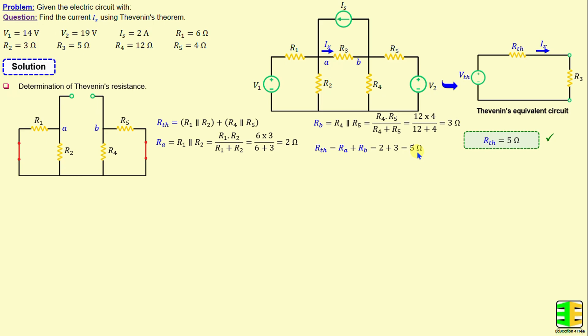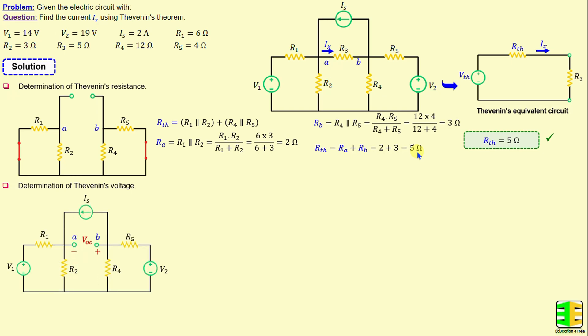After finishing the determination of Thevenin's resistance, we proceed to calculate the Thevenin's voltage. The Thevenin's voltage is basically the open circuit voltage calculated between terminals A and B when R3 is disconnected. To find the open circuit voltage VOC, I will apply the nodal analysis method. I will consider I1 as the current through R1, I2 as the current through R2, I3 as the current through R4, and I4 as the current through R5.